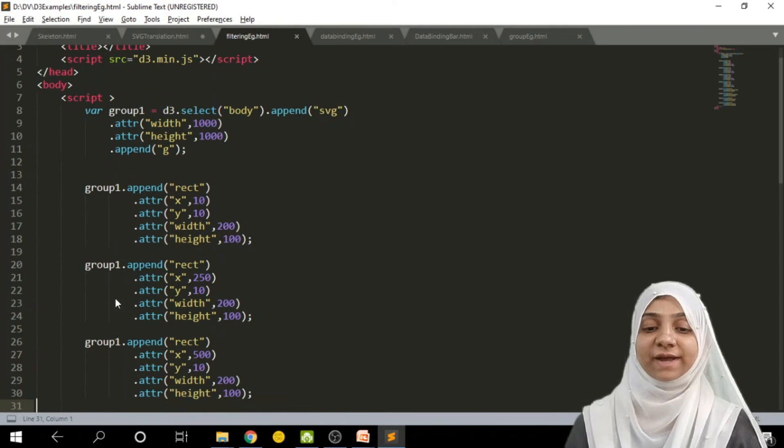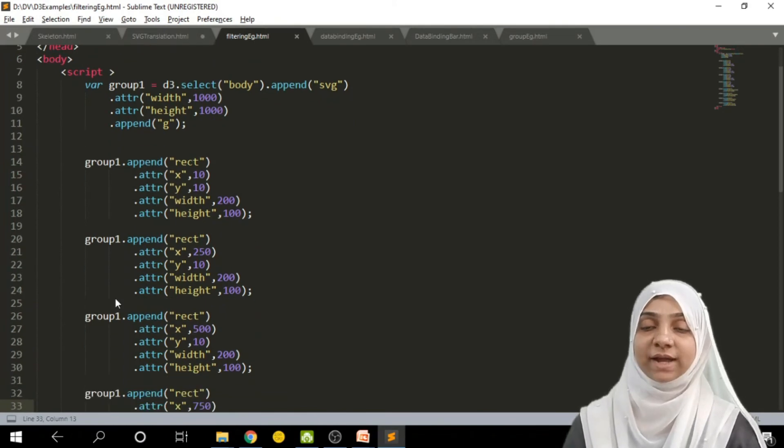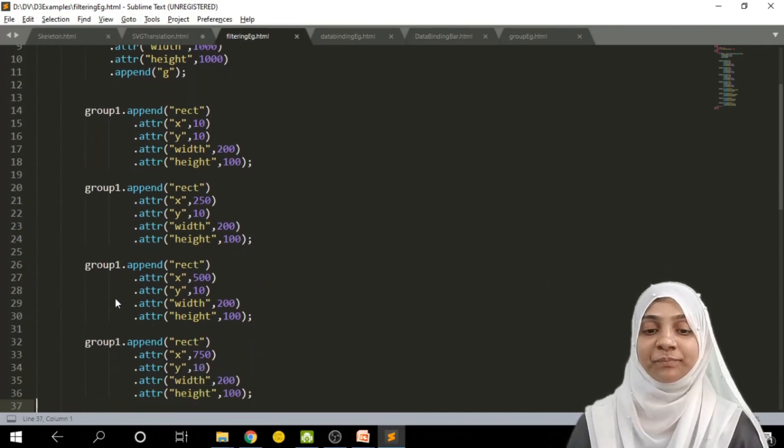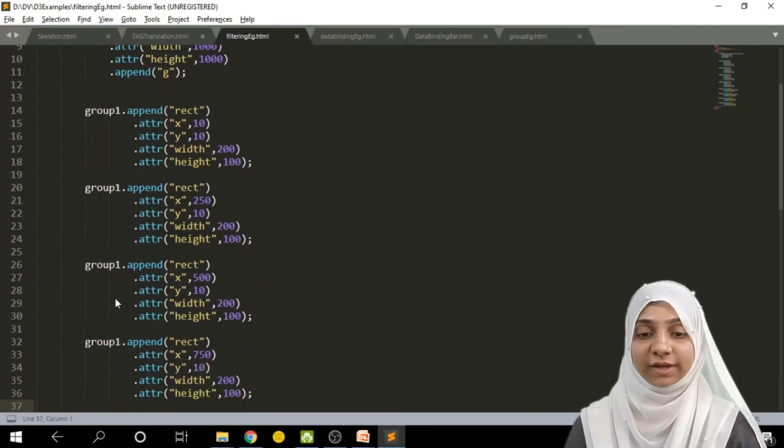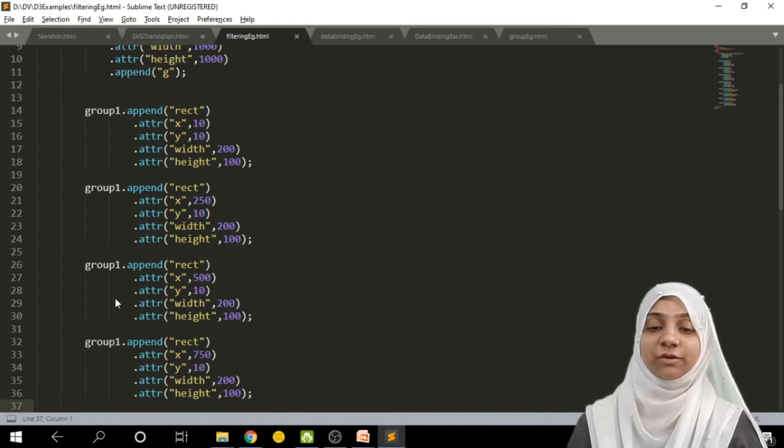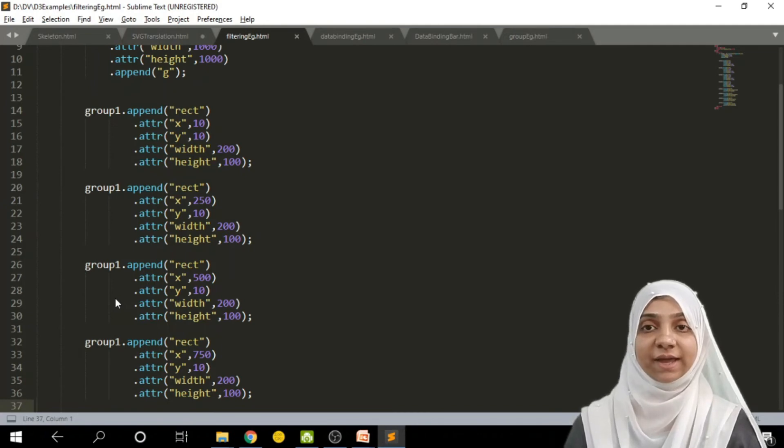Within group, we have added one more rectangle, that is rectangle 3, at x coordinate 500 and y coordinate 10, width and height of this particular rectangle is also same to the previous two rectangles. Likewise, we have added four rectangles, that is at 750, 10, and width and height is also again kept same.